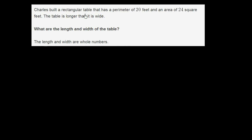Charles built a rectangular table that has a perimeter of 20 feet and an area of 24 square feet. The table is longer than it is wide. What are the length and width of the table? The length and width are whole numbers.